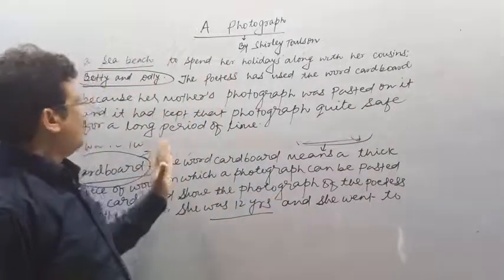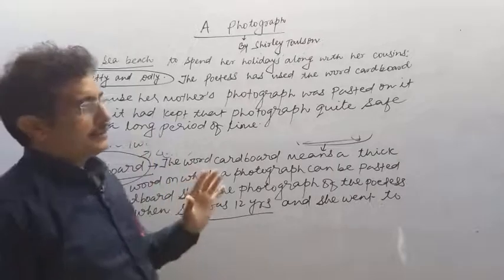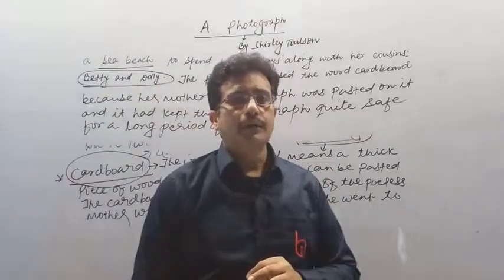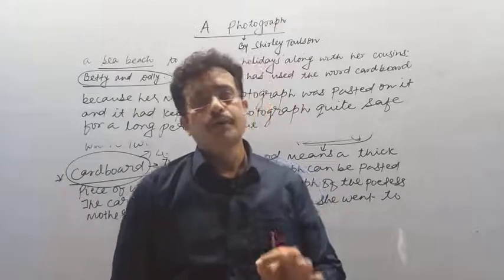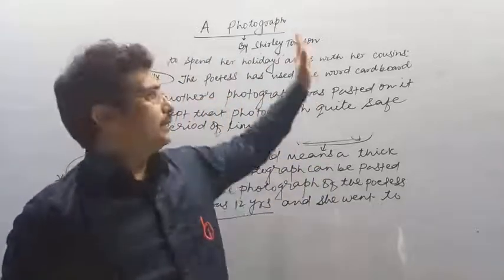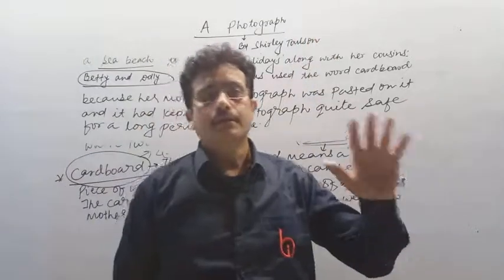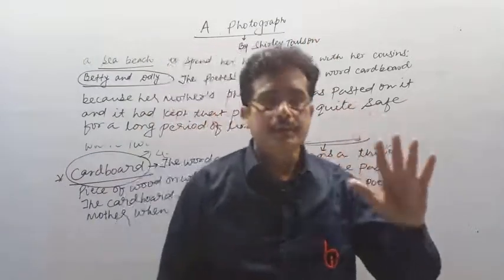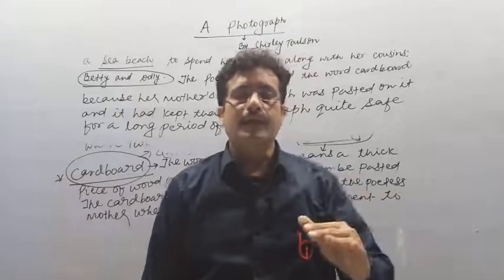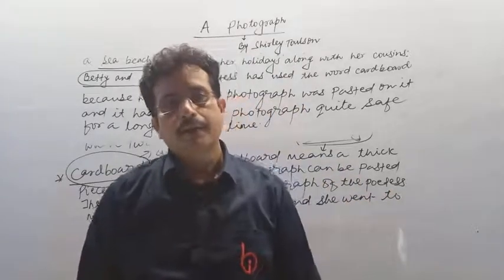So the first line we explained today is: 'The cardboard shows me how it was when two girls, cousins, went paddling.' Today we have seen the central idea, message, and stanzas of this poem. We will explain the next lines in the next class. Thank you.